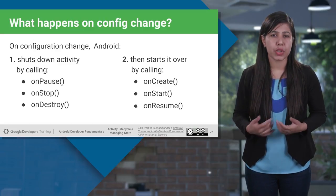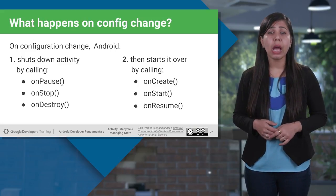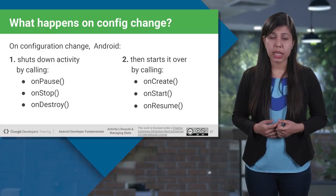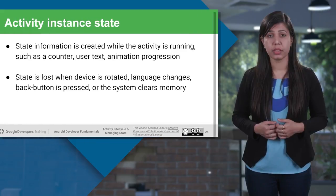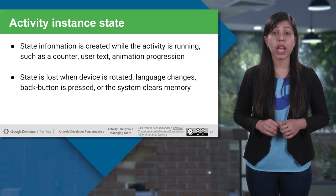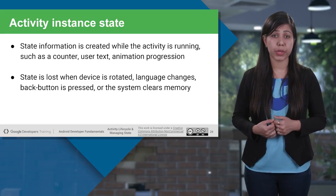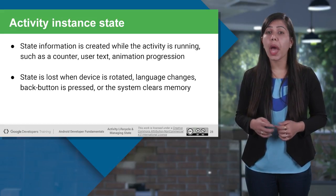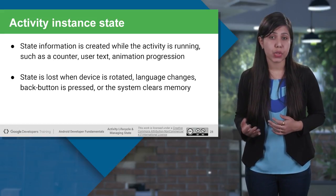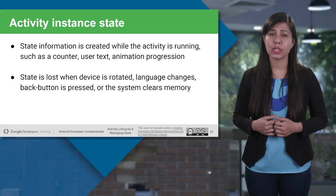The user doesn't realize that this is happening. They just launch the application and expect it to be where they left it. They don't realize that when they open another application and come back, Android may have killed it — losing all information that was in memory. For example, if a user filled out some text in a text box and your application was destroyed, the text would be gone when the user returns because the activity would have been recreated. State information is created while the activity is running and is lost when the device is rotated, the language changes, the back button is pressed, or the system clears memory.